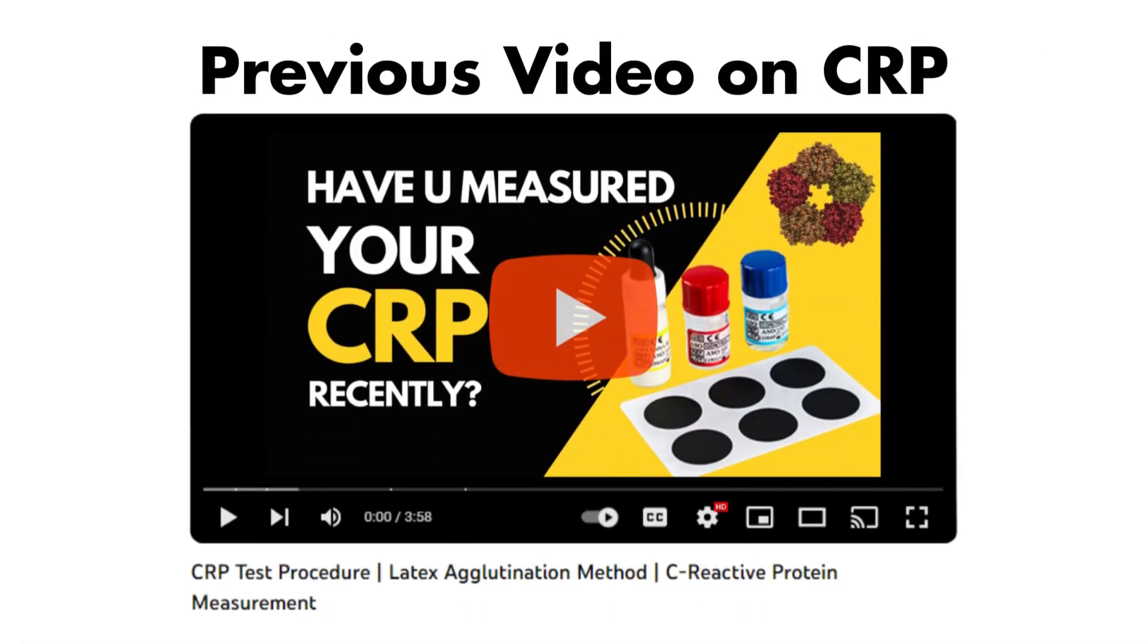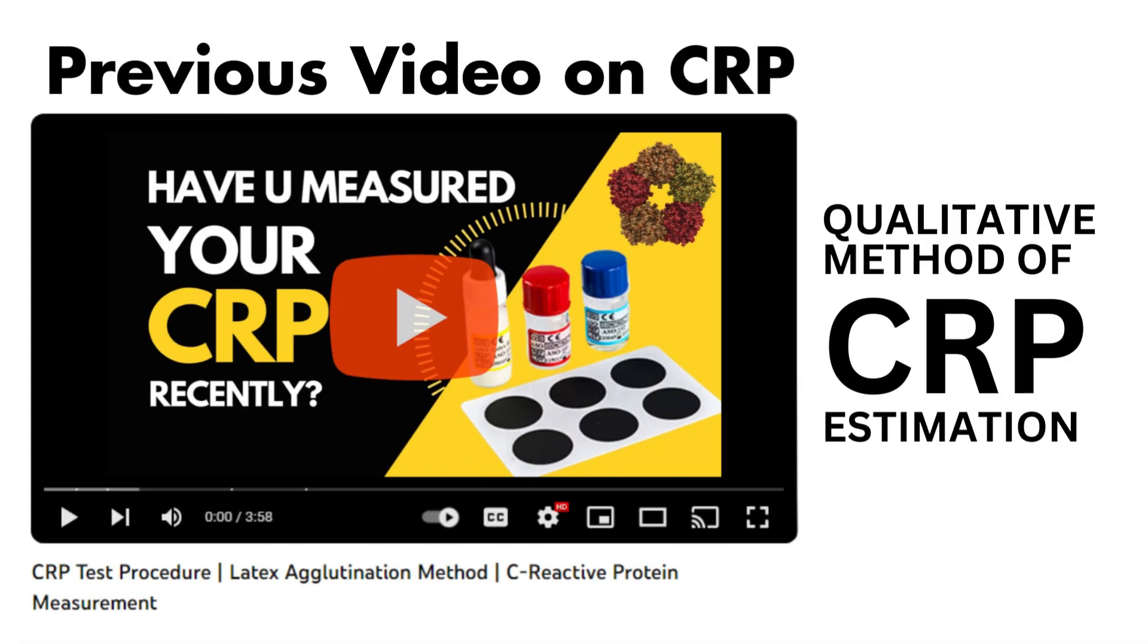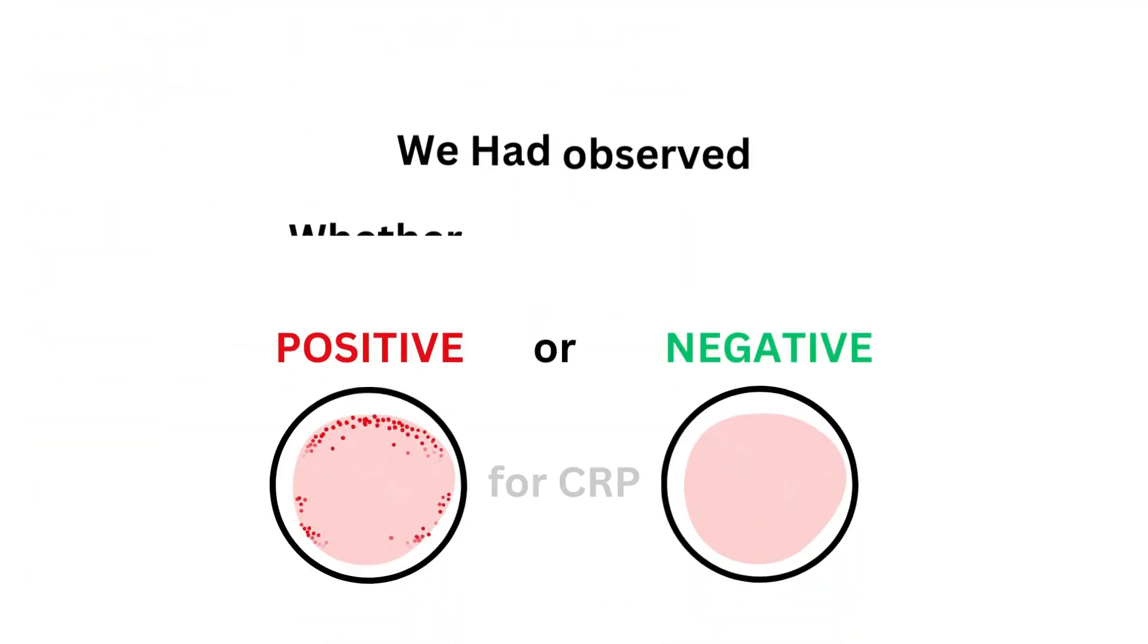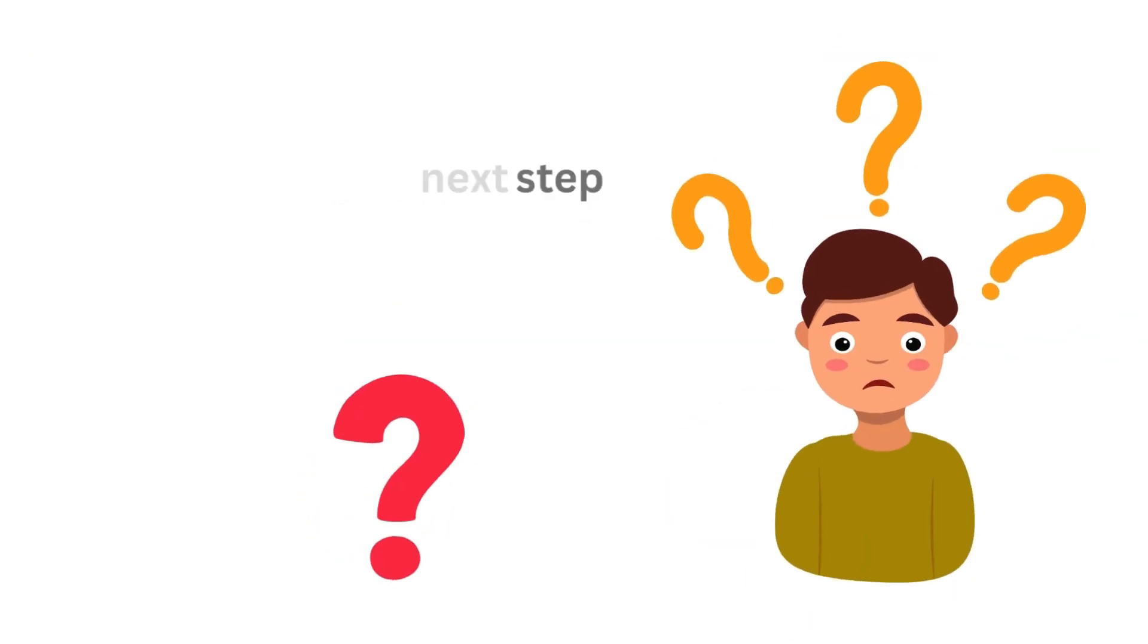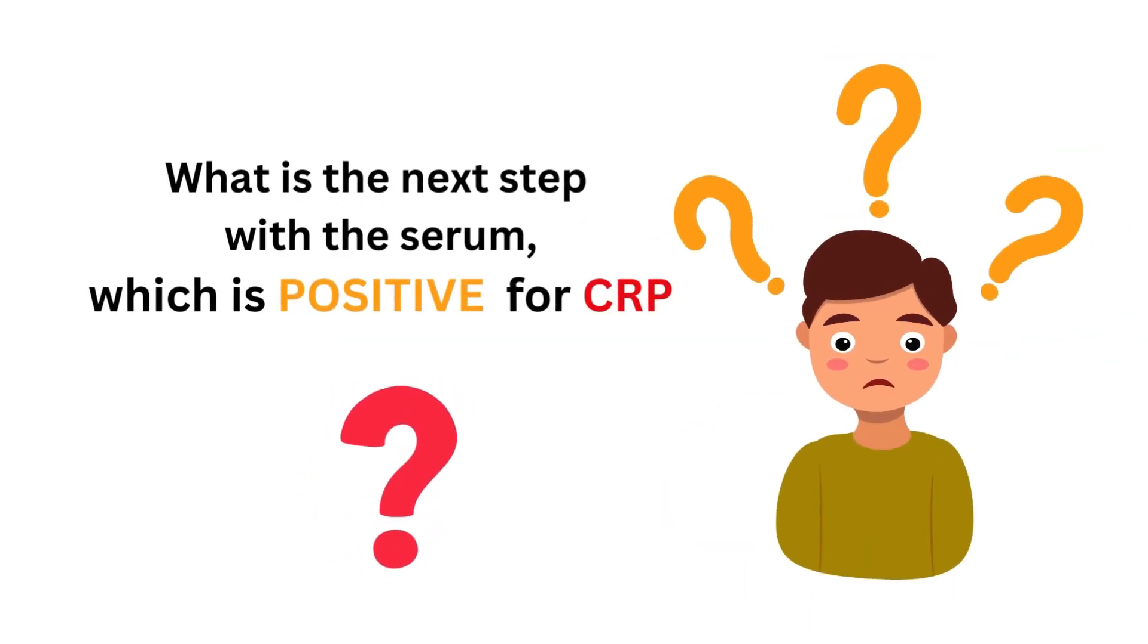In the last video of CRP series, we demonstrated the procedure of qualitative method where we observed whether the serum is negative or positive only. Today we will learn what is the next step after we found the serum positive for CRP.